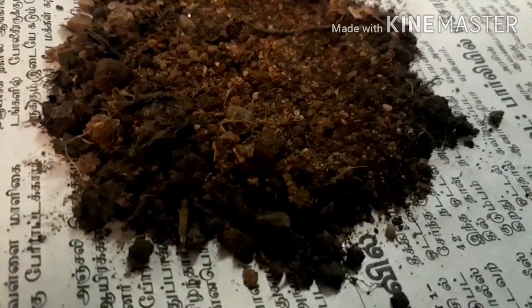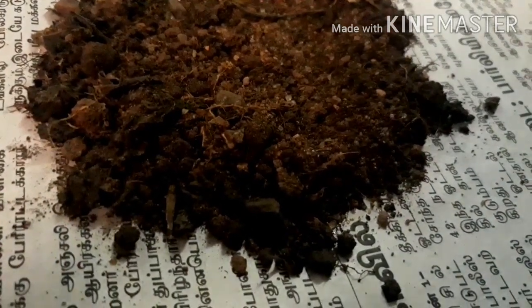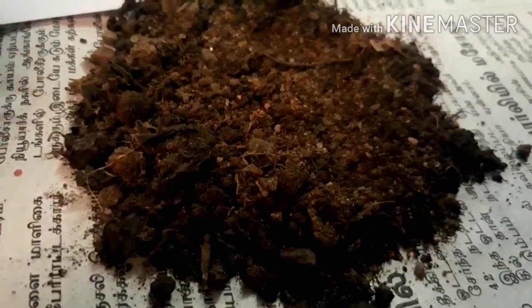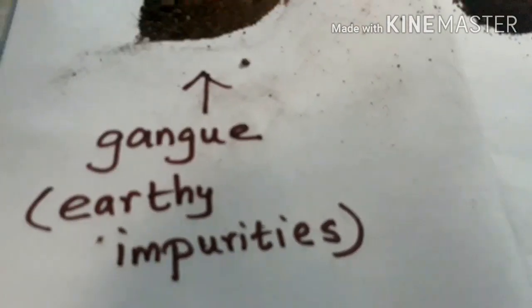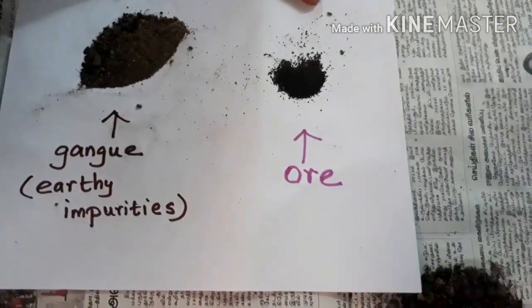This activity I often did in my childhood days — I think you also do this one. I am going to take some sand, and I am moving the magnet through this sand. What happened there? The iron particle will separate, and the sand will also separate. Here, the iron particle is called as ore, and the removed sand particle is called as earth impurities — that is gangue. It is a simple magnetic separation process.